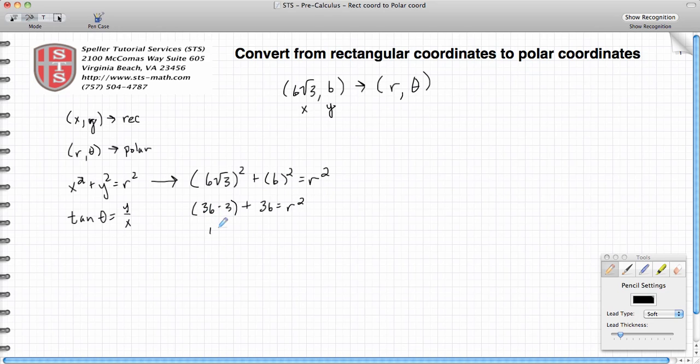36 times 3 is equal to 108, plus 36, again still equal to r². Let's evaluate on the left-hand side here. Those two numbers add up to 144, and that equals r².